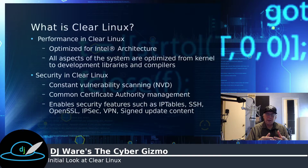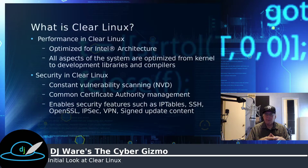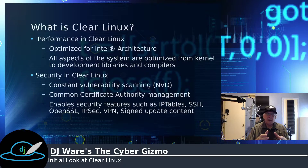Clear Linux also offers security, and there are some examples of what it does. The first is it does constant vulnerability checking with the NVD and alerts you if there are CVEs that will impact your installation. It has a common certificate authority that keeps your certificates safe and away from the normal places where people would be able to find them. It enables security features out of the box — IP tables, SSH, OpenSSL, IPSec VPN — and the actual updates to the system are signed, though that's not unique to Clear Linux; a lot of distributions do that today.